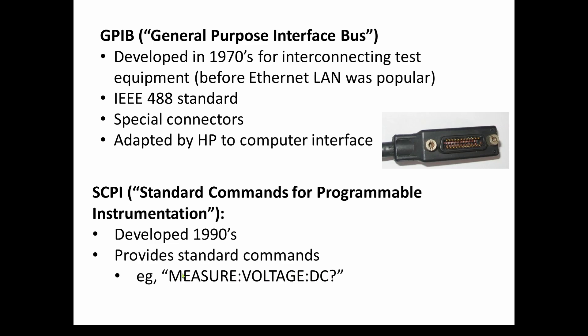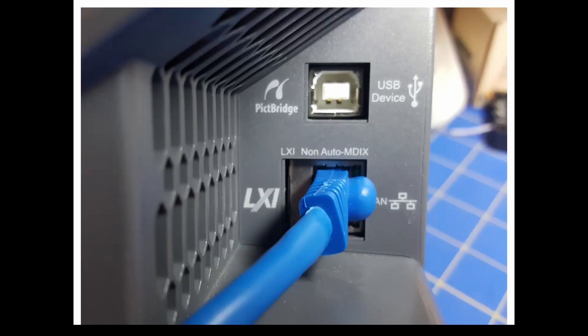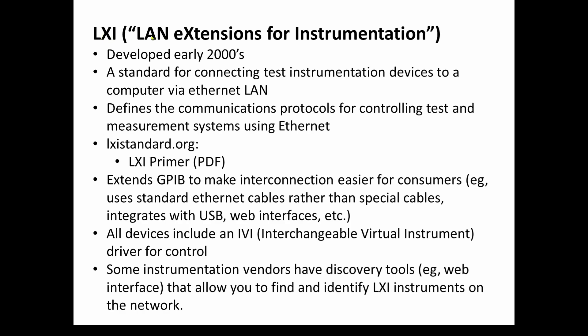Here is a view of the back of my oscilloscope. As we mentioned, GPIB was developed before local area networks were around. You can see something called LXI, which is a standard associated with these newer Ethernet LAN connections that came about later on. LXI stands for Local Area Network Extensions for Instrumentation. So we had GPIB for older instruments, and now that we've got local area networking, in the early 2000s they decided to develop a standard that allows for the additional usage of LAN connections to the instrumentation — for connecting test instrumentation devices to a computer via Ethernet LAN.